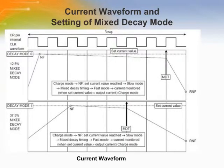At constant current control, in current amplitude or pulsating current decay mode, a point from 0 to 3 can be set using 2-bit parallel data. NF is the point where the output current reaches the set current value. RNF is the timing for monitoring the set current. The smaller the MDT value, the smaller the current ripple.